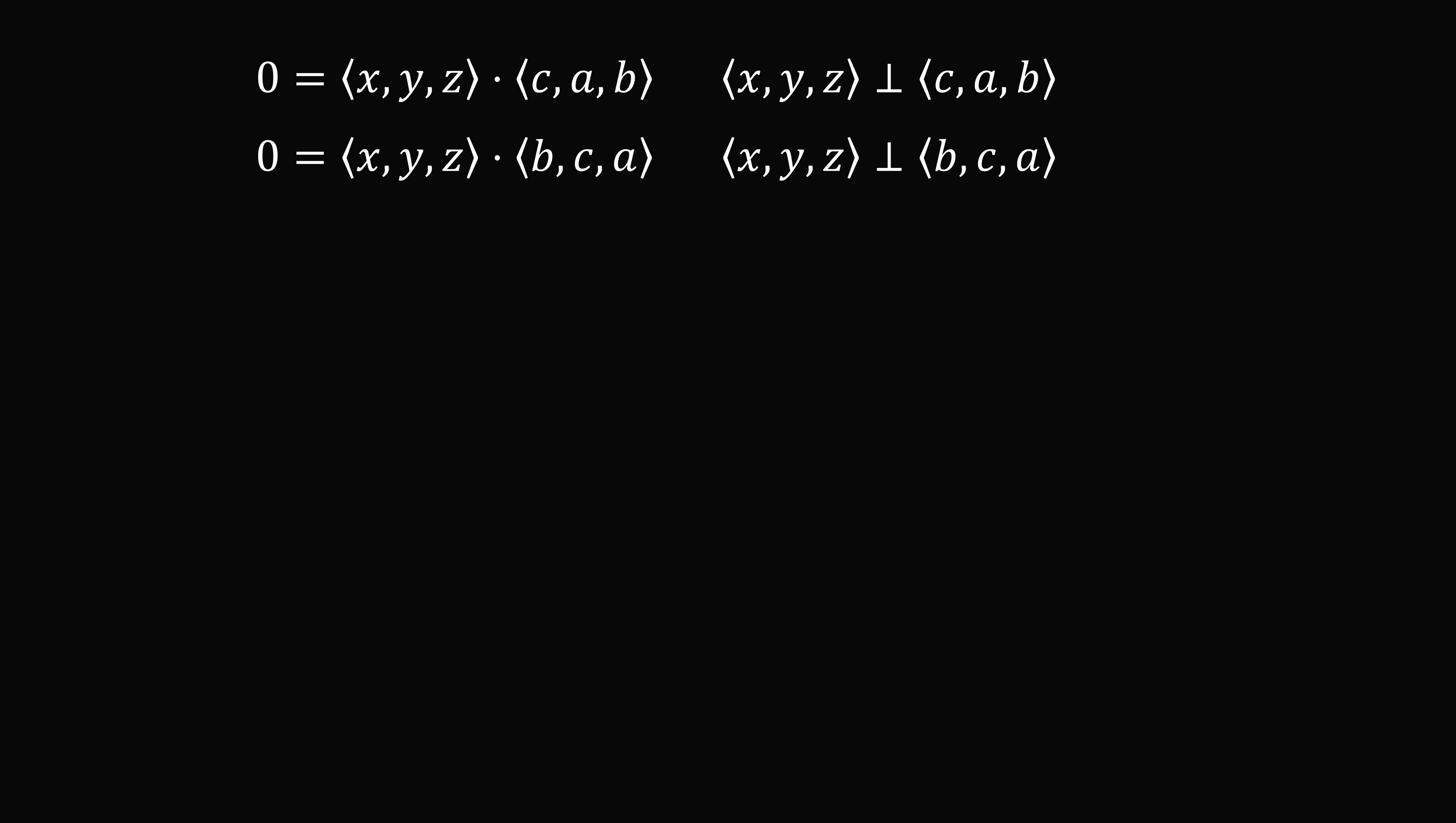We will take the cross product of (c, a, b) and (b, c, a). Let's calculate that out. From this form, we have the determinant of this matrix. We will use cofactor expansion. From i, we will cancel out the row and the column, so we get i times the determinant of this 2x2 matrix. Then, for j, we cancel out the row and the column. Here we have to have negative. Finally, we do the same thing for k, and we have plus k times this 2x2 determinant. We calculate each of these determinants very easily. Then, we can write the result in vector form: (a squared minus bc, b squared minus ac, c squared minus ab).